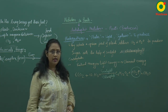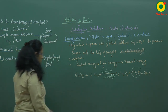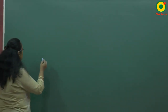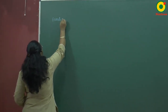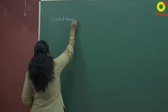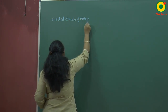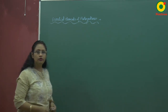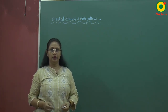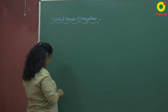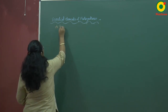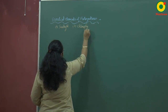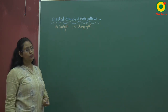Now let us see what are the essential elements of photosynthesis. There are two main essential elements of photosynthesis: sunlight and chlorophyll. These are the elements without which photosynthesis cannot be performed.